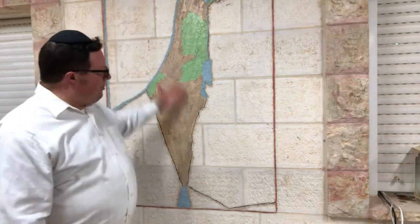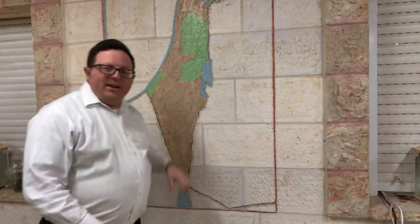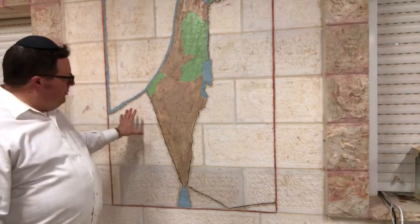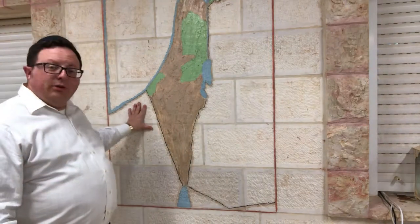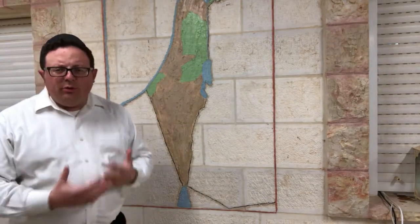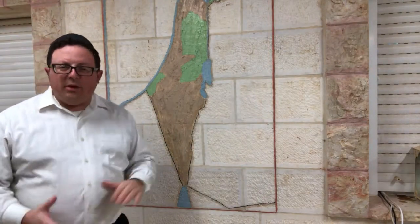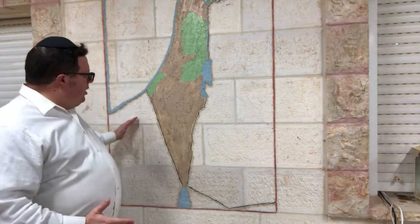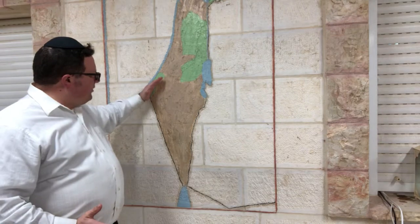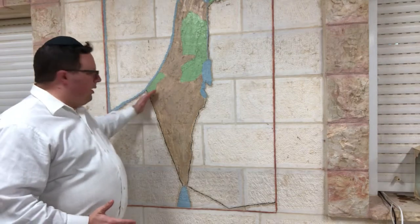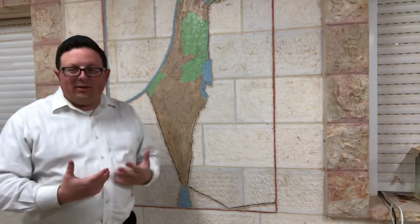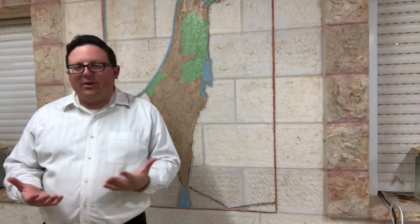This is a map of Eretz Yisrael. Here is Mitzrayim — this is Egypt. When the Jews left Mitzrayim, they should have gone straight into Eretz Yisrael this way, through Azzah, what today is called Gaza.